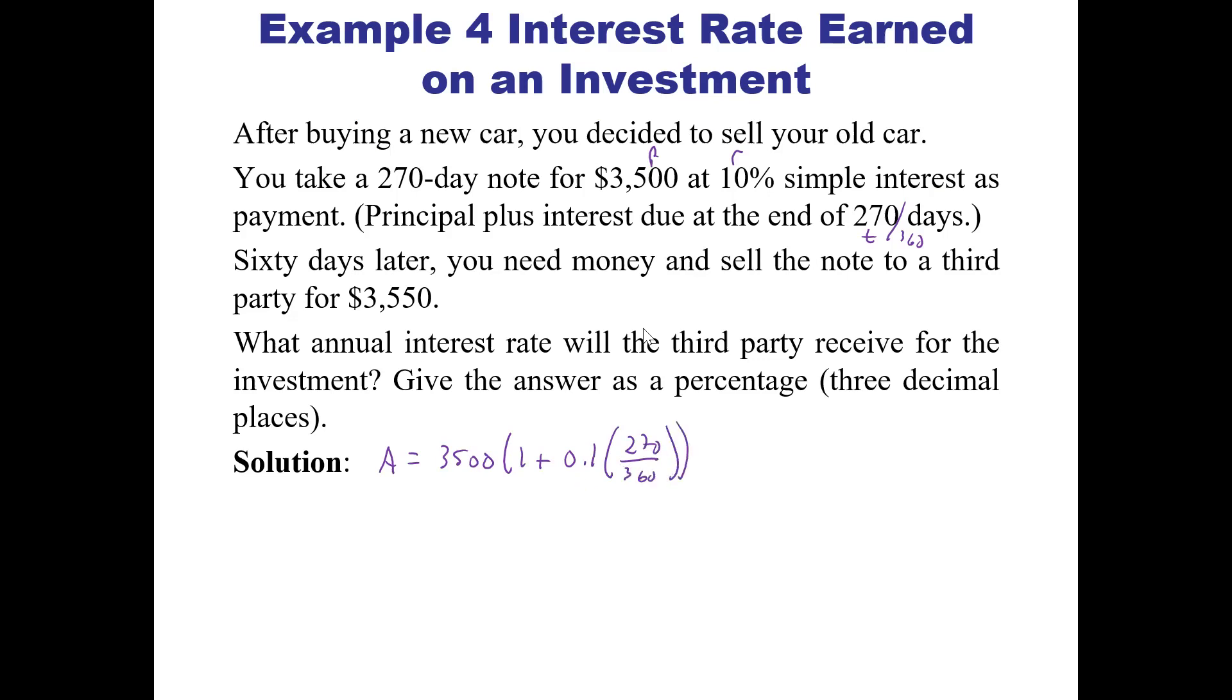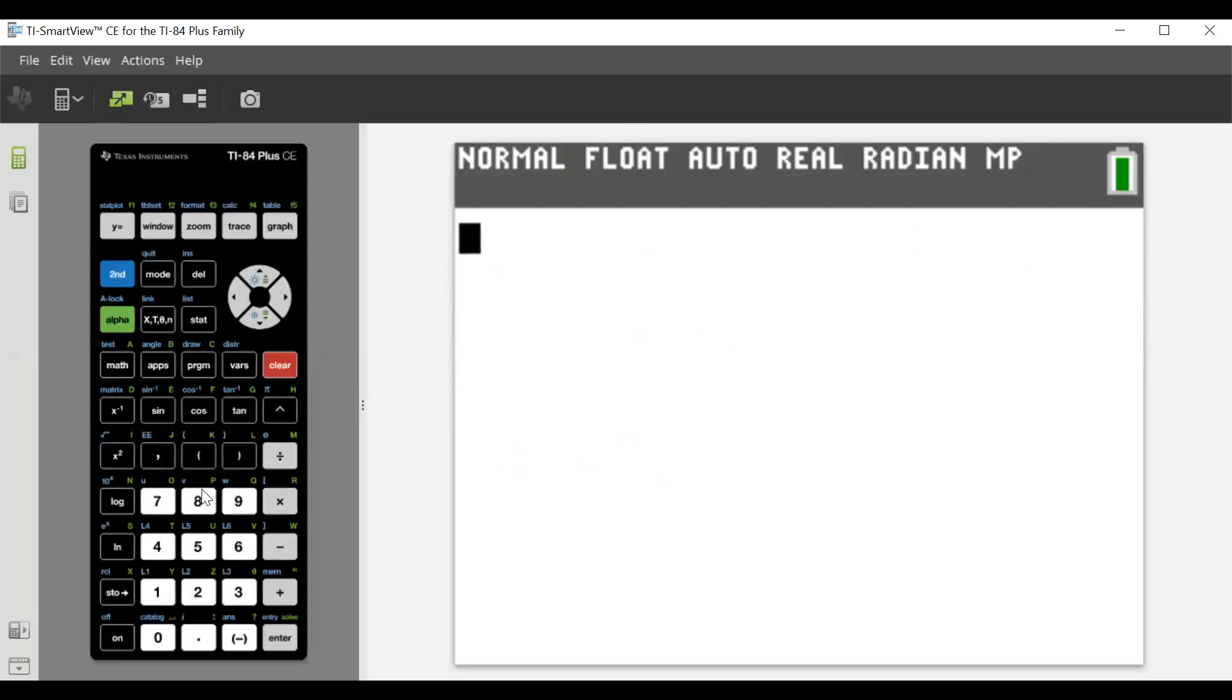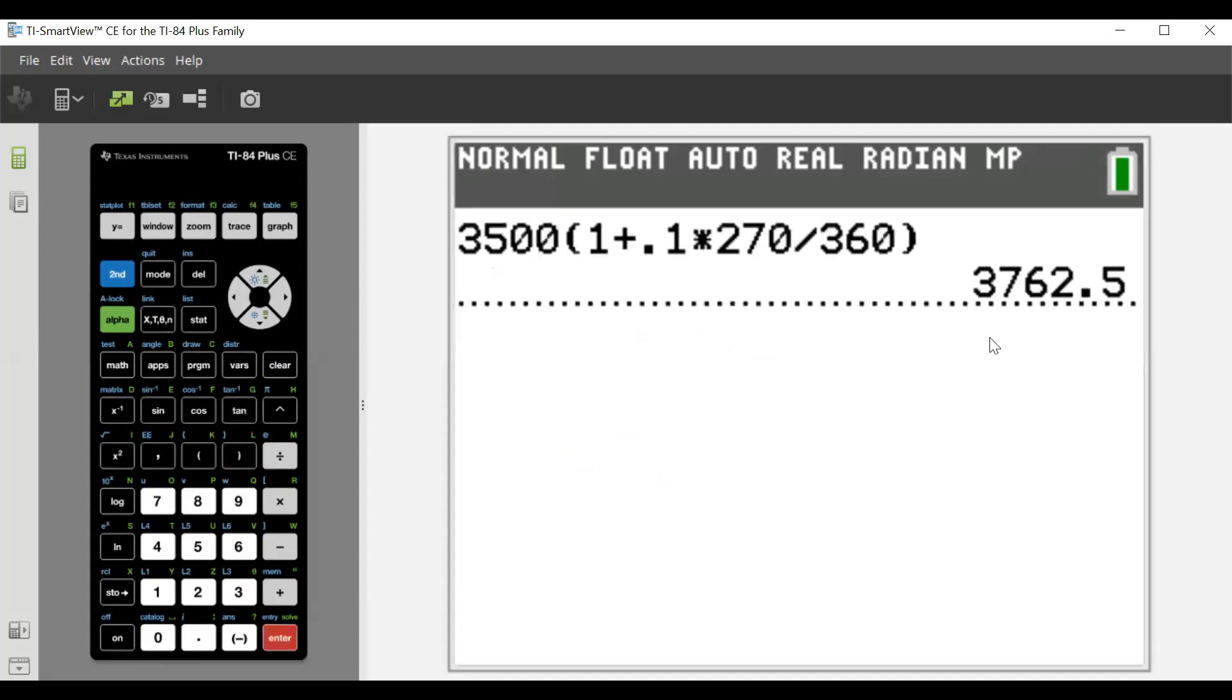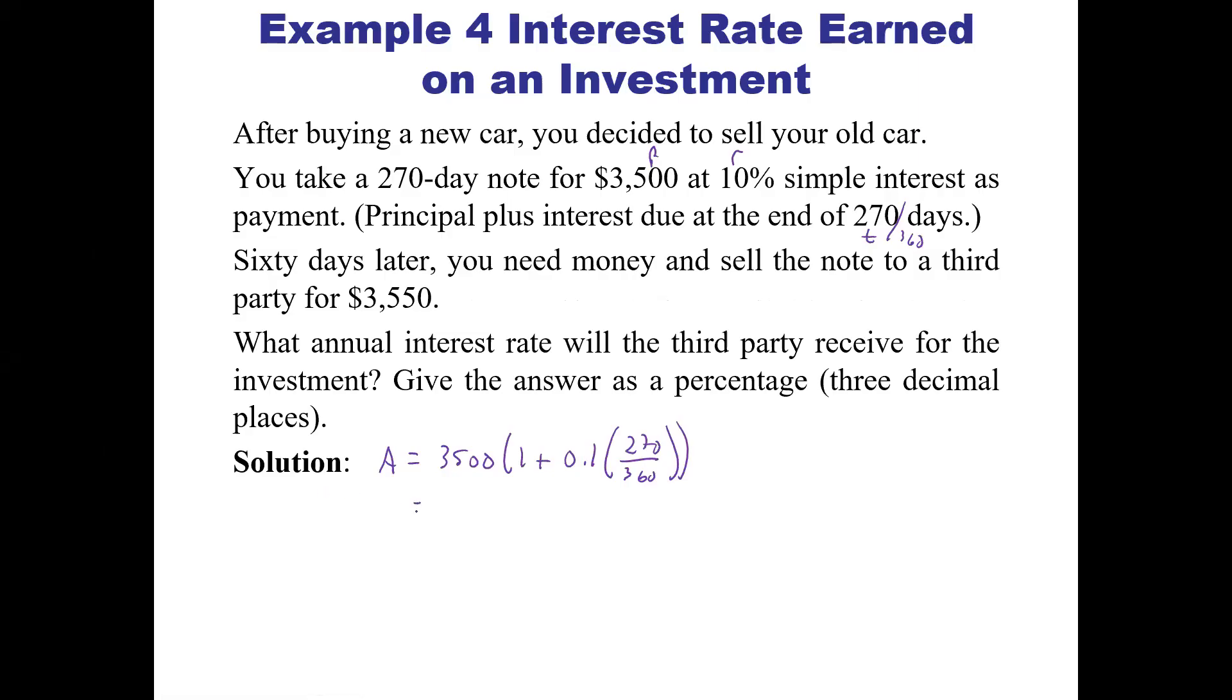Okay. So we can solve that one. So let's go ahead and do that. We're going to take, let's clear all that out. We'll take our $3,500 times 1 plus 0.1 times 270 divided by 360. And that gives us $3,762.50. And so that's our answer to part one here. So the future value would be $3,762.50.